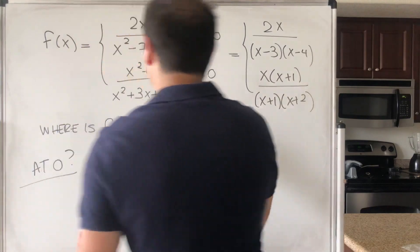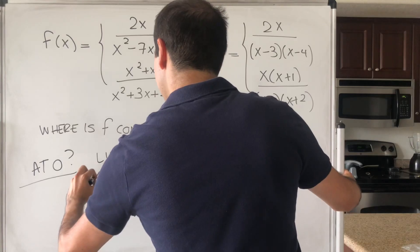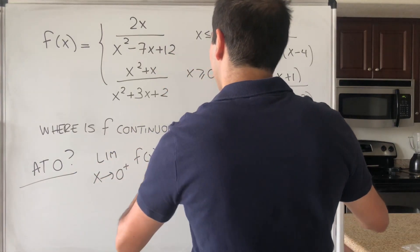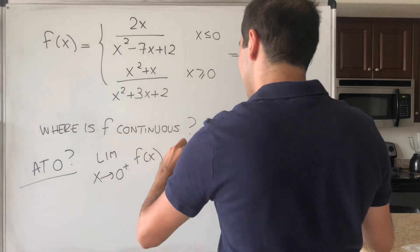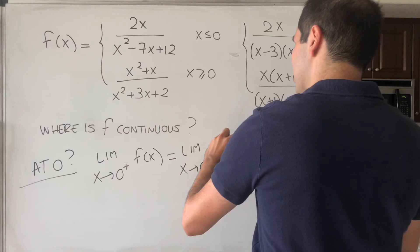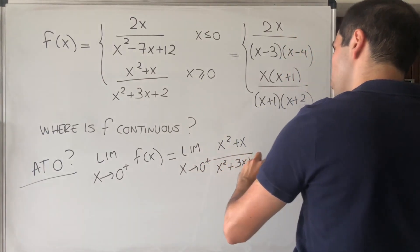And to figure out if it's continuous at 0, you just need to take the limit. So limit x goes to 0 plus of f of x, or in that case use this definition, limit x goes to 0 plus of x squared plus x over x squared plus 3x plus 2.